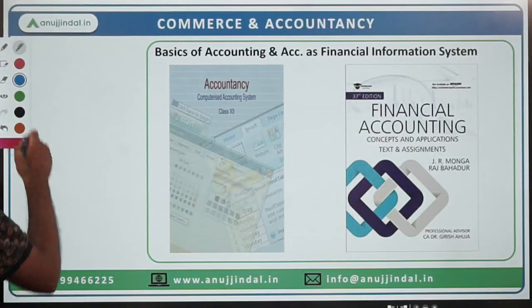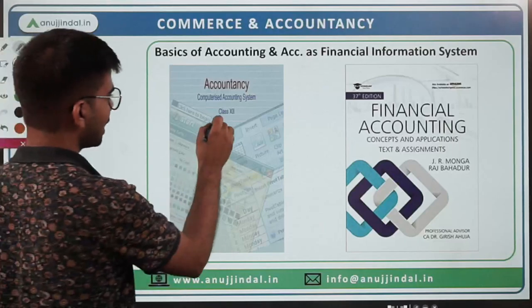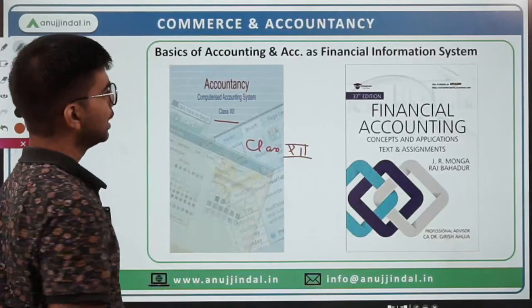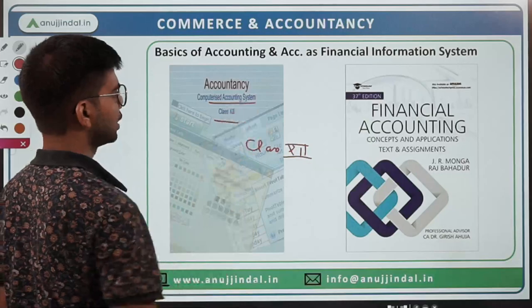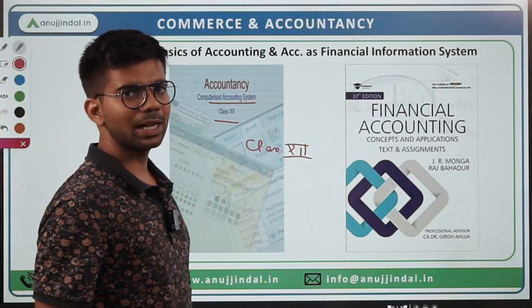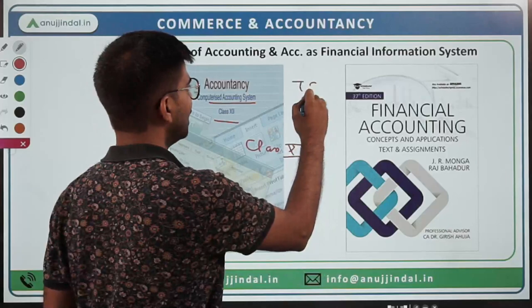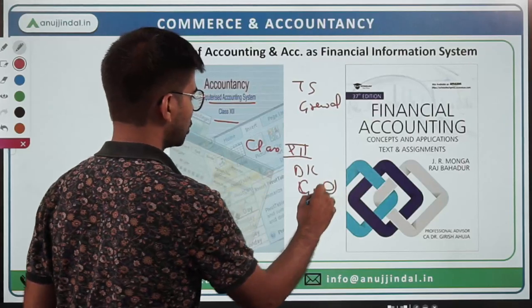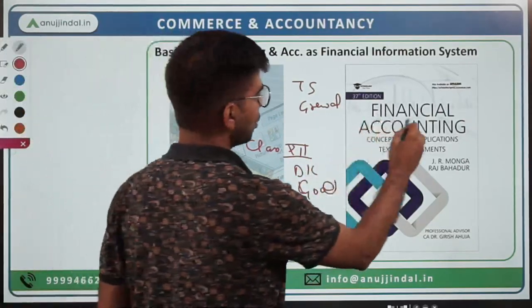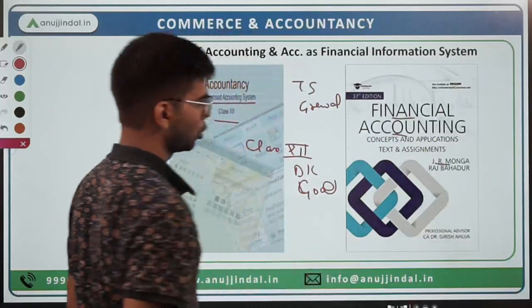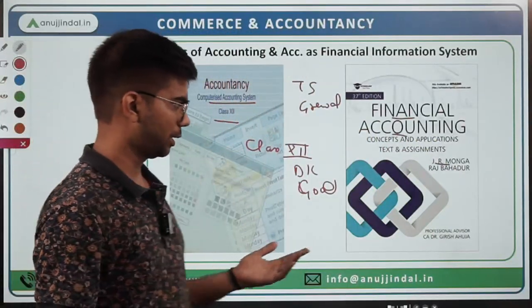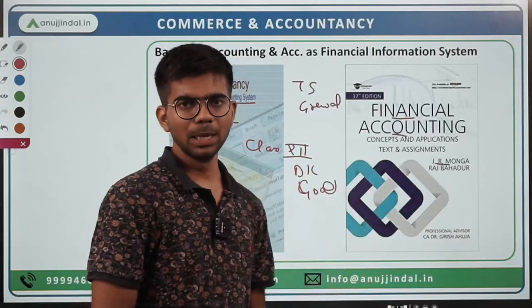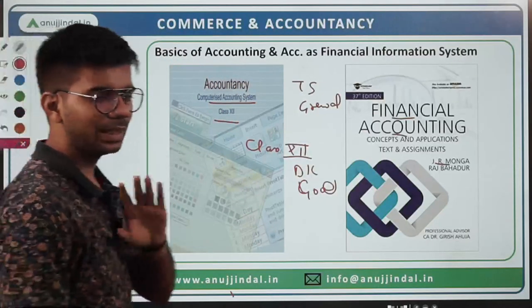To cover basics you can also refer to Class 12th NCERT books — there are actually 3 parts in NCERT including a Computerized Accounting System part. There are also books from other authors for Class 11th and 12th like T.S. Grewal, which is a very good author, or D.K. Goyal. Additionally, there is a Financial Accounting book by J.R. Monga, which is a Bachelor's level book. For better clarity and in-depth study, you can refer to this as well — NCERTs will clear your basics.